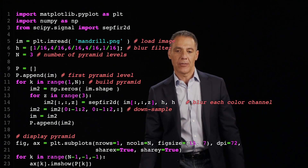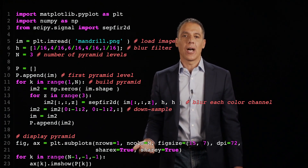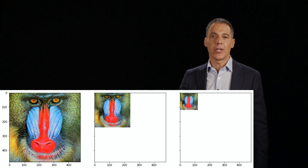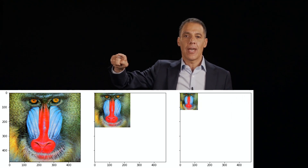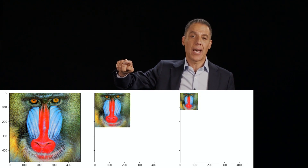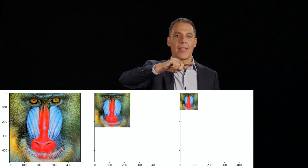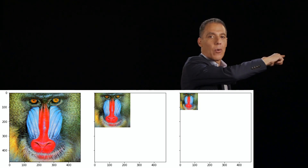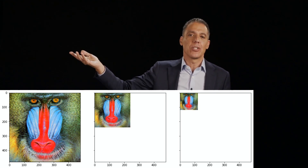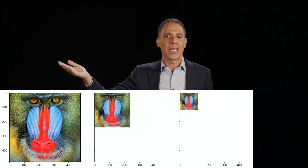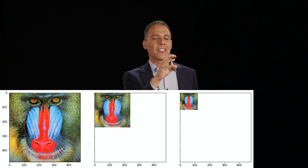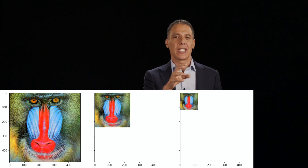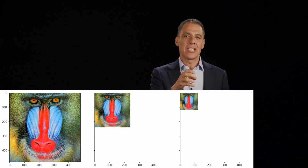This code displays all the levels of the pyramid: full resolution at the top, then half resolution, downsampled by a factor of two in both dimensions, and then again. We can keep going all the way down. Where do you stop? It depends on the original resolution — you probably don't want to get much lower than 32 by 32. Once you get down to 16 by 16 pixels, you're getting into noise and very little content.